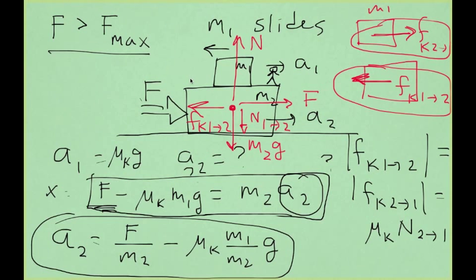It's like M1 doesn't exist, really. M1 stays in place and M2 accelerates because of the force F applied. So it makes sense that in that case, the acceleration of M2 should be equal to f divided by M2.